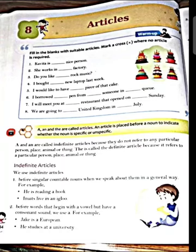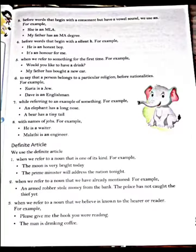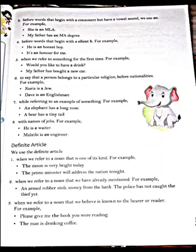So children, pay attention here. The word begins with vowel letters A, E, I, O, U, but the sound will be consonant. So in that case we will use article A. And if a word begins with a consonant letter but has a vowel sound, in that case we will use AN before the noun. Like: He is an MLA. My father has an MA degree. MLA and MA begin with the letter M, which is a consonant, but its sound is a vowel sound. That's why we use AN before MLA and MA.